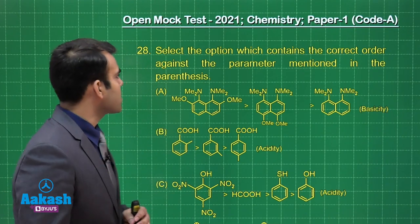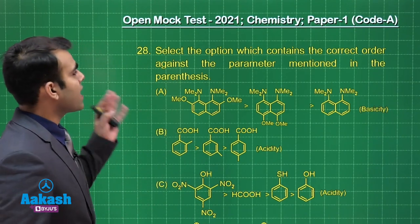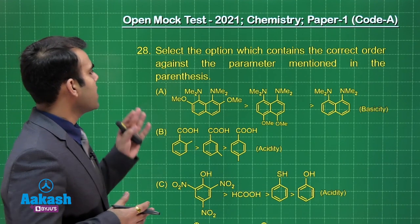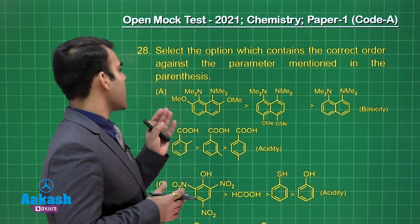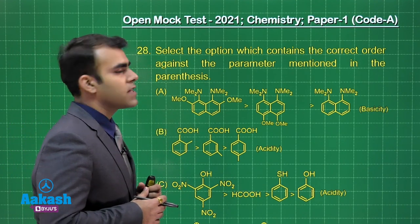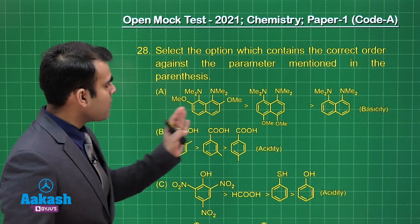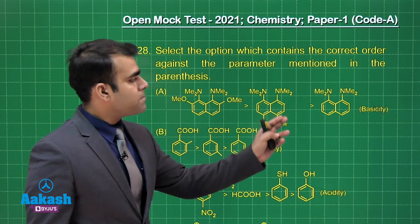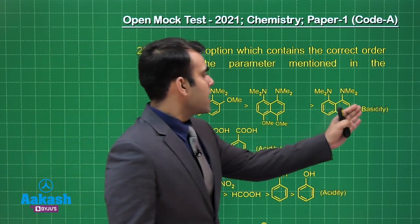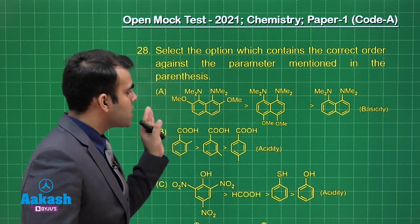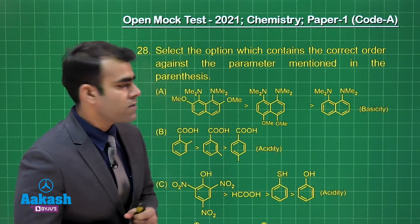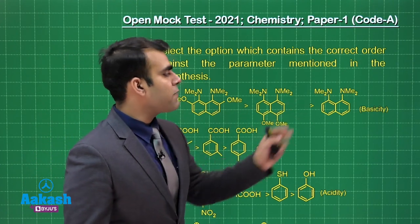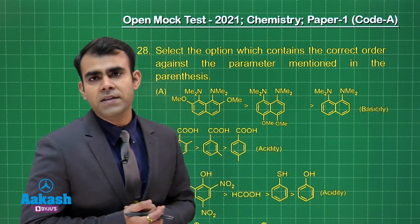In this question, we have been given: select the option which contains the correct order against the parameter mentioned in the parenthesis. Here we have been given certain orders and the condition or parameter on which we have to judge these compounds. For example, in the first case, we have been given three compounds and we have to judge their basicity.